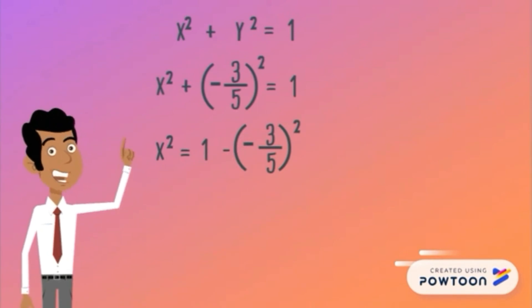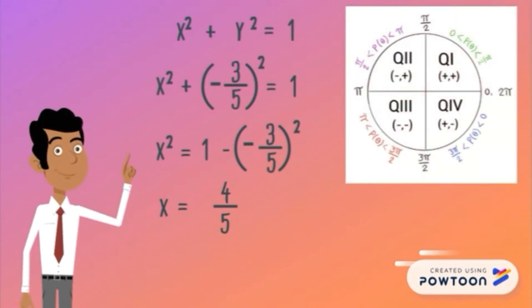Now, let's go back to the given since we know that the point is in quadrant 3. And the coordinates for quadrant 3 are negative x and negative y. Then, we know that our x, 4 over 5, is negative. Our final answer is x equals negative 4 over 5.